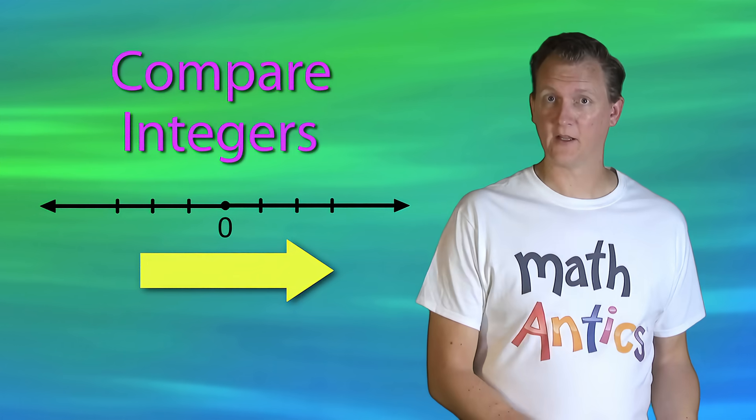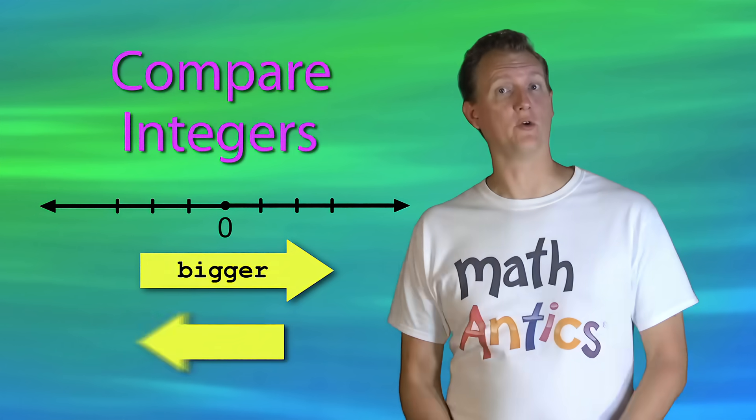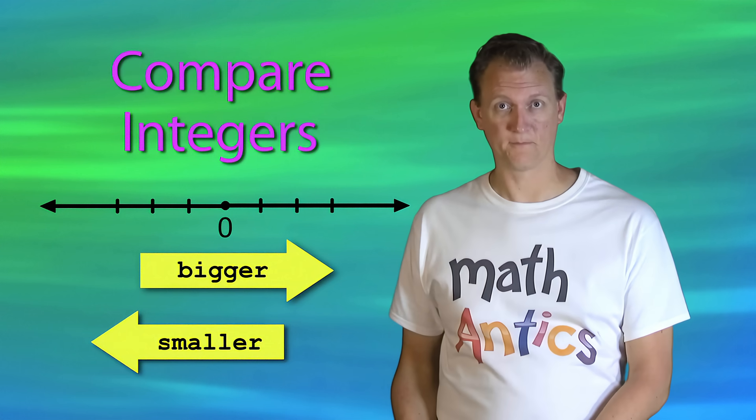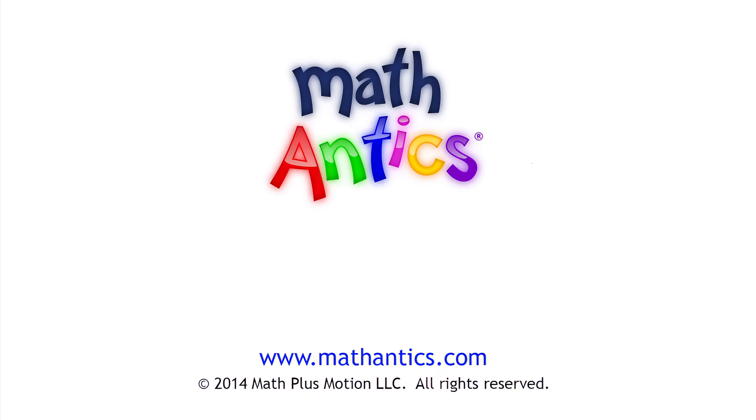We also learned how to compare integers. As you go to the right on the number line, the integers get bigger, and as you go to the left, they get smaller. Comparing integers can be confusing at first, so be sure to practice until you've really got it. As always, thanks for watching Math Antics and I'll see you next time. Learn more at MathAntics.com.